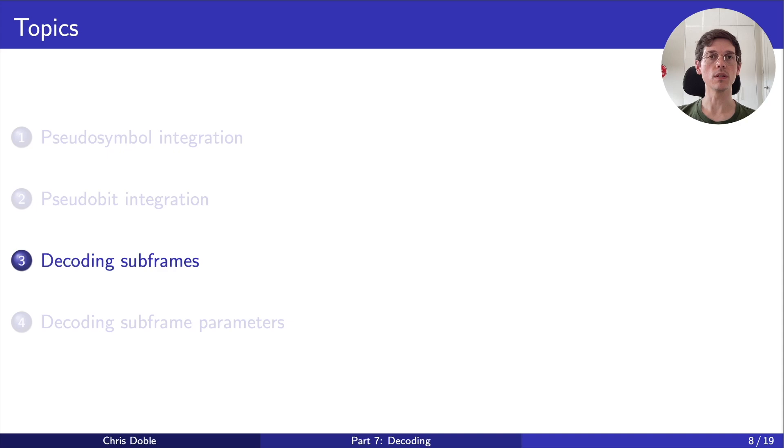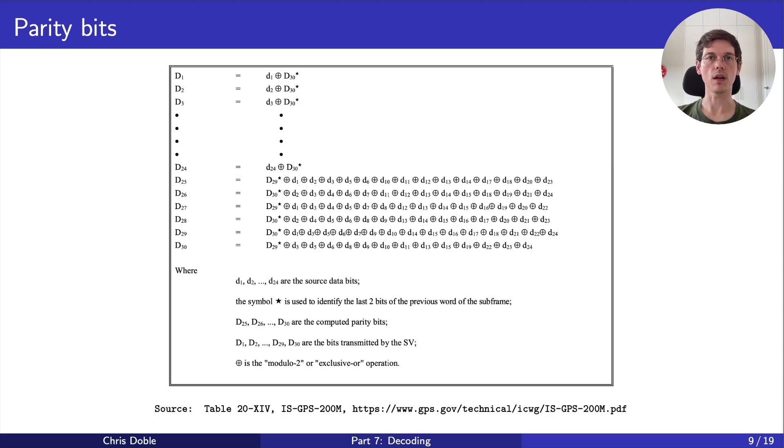The equations to do this are listed in the GPS specification. They look a little intimidating, but they're actually quite straightforward, and it's just a matter of translating them to code exactly as they're written. After applying them, we'll have our data bits.